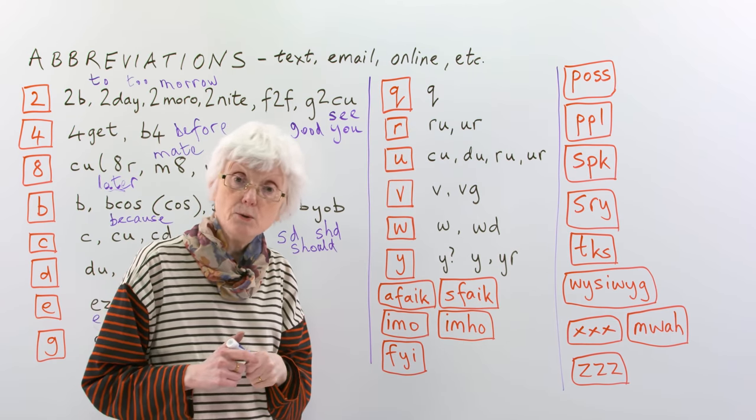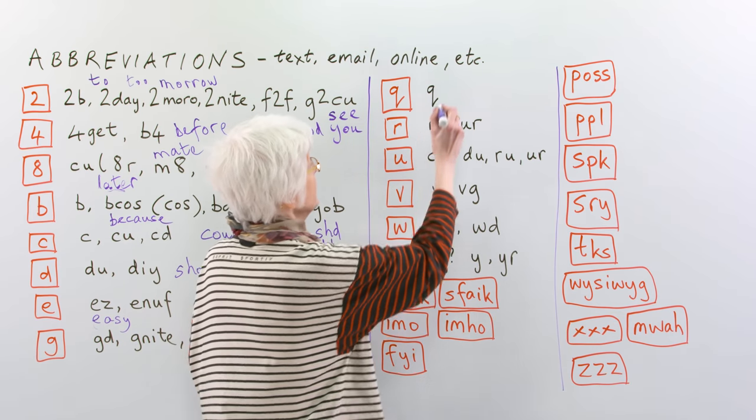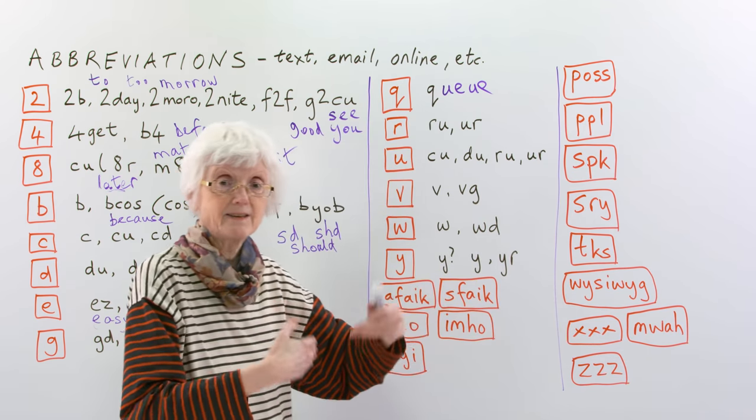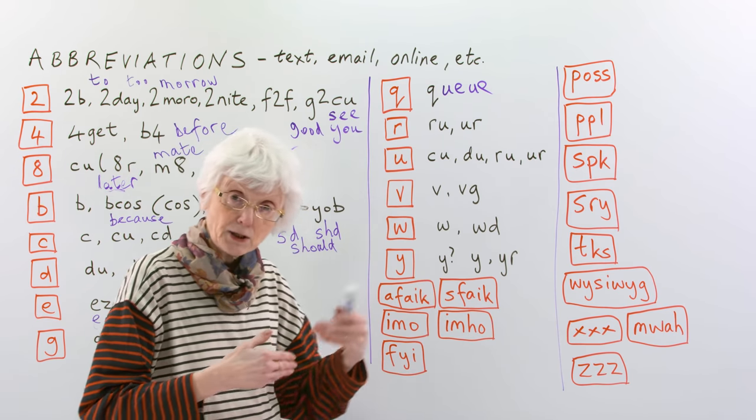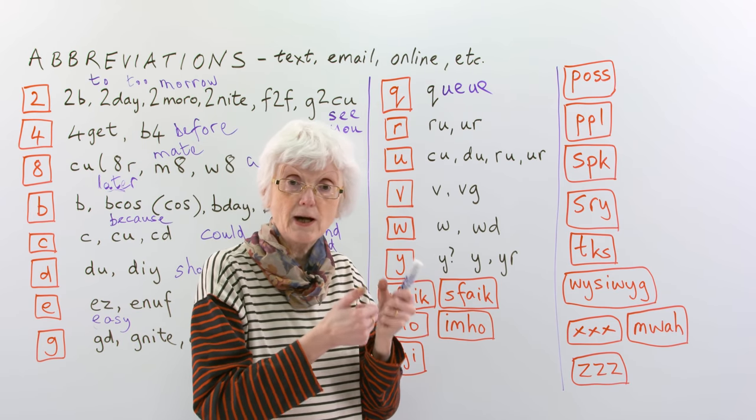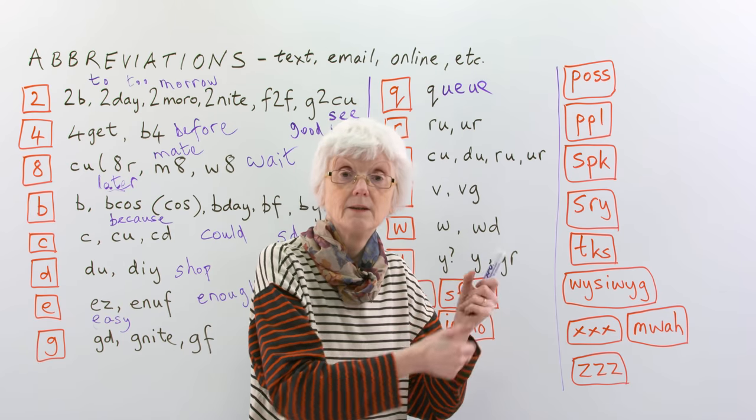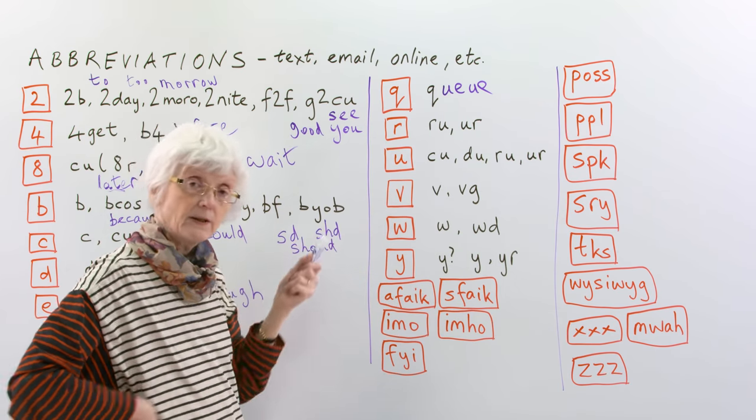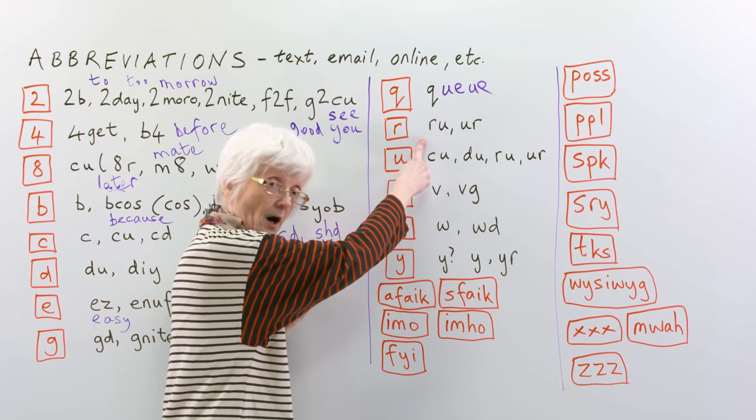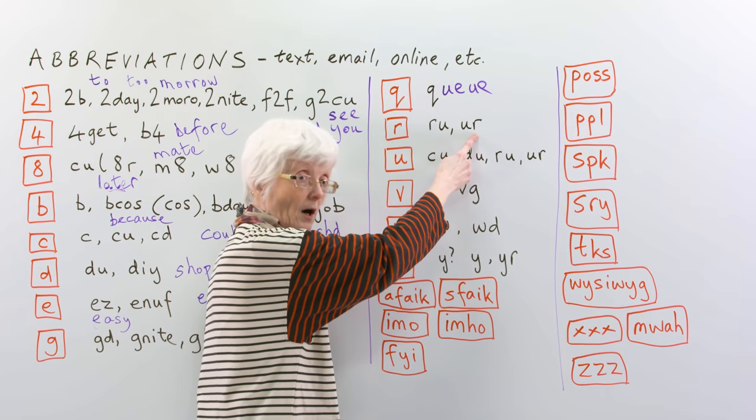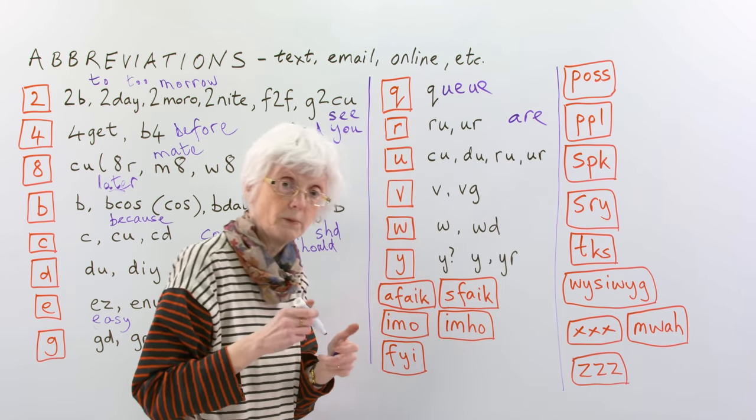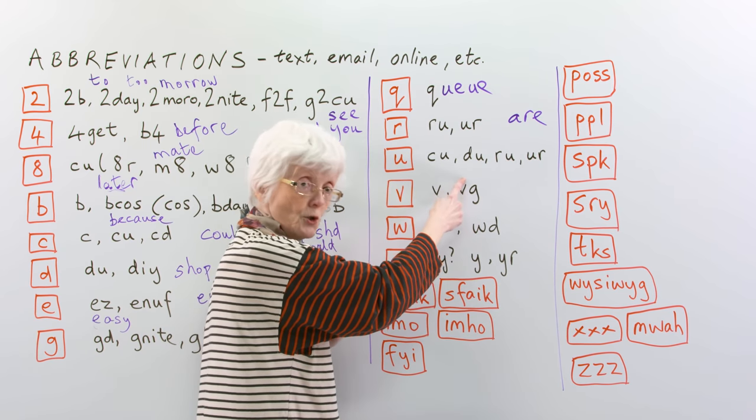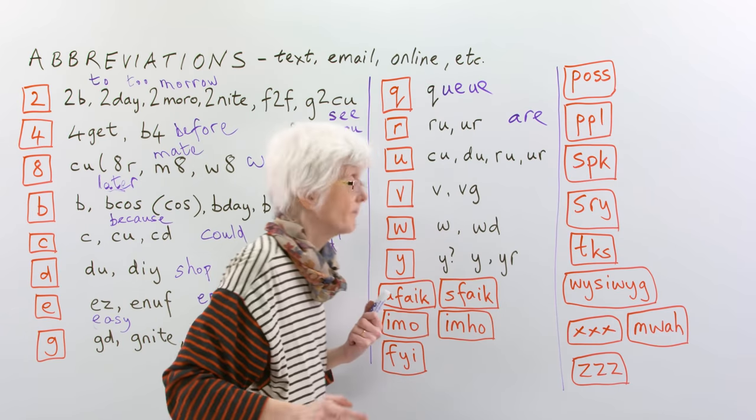Q, if you say the letter Q, it sounds like the word, that funny word, where people stand in a line waiting for something, maybe in a shop, waiting to be served, they're in a queue. So, someone might send you a text message, I'm going to be late, I'm waiting in a queue to buy my train ticket or something like that. So, they just put Q. Then, if you say this letter, it's are. So, are you, or you are. So, it's the verb to be the form, are. And then you, we've had before. So, see you, do you, are you, you are.